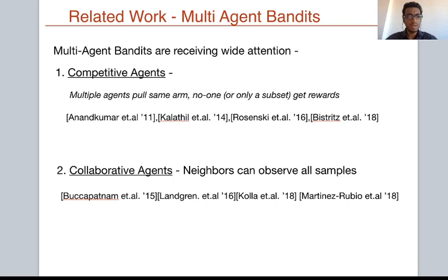Looking at the multi-agent bandit literature, it can broadly be classified into two categories. One where agents are competitive—they choose arms to selfishly maximize individual reward, and models typically involve cases where multiple agents pulling the same arm results in no reward or only a subset receiving rewards. On the other hand, the collaborative agents literature assumes agents can exchange all samples—arm pulls and stochastic rewards—with other agents. In our paper, this paradigm is not feasible due to communication concerns, and thus we propose a new collaborative learning algorithm.